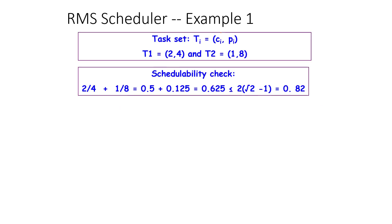We will use EI, PI, or CI interchangeably — they all refer to execution time or the time it takes to complete. One theorem we use is that for two tasks, if the sum of the utilizations — in this case 2/4 plus 1/8, which comes to 0.625 — is less than 2 times (square root of 2 minus 1), then it is guaranteed to be RMA schedulable. Since 2×(√2 − 1) is 0.82, and 0.625 ≤ 0.82, schedulability is guaranteed.